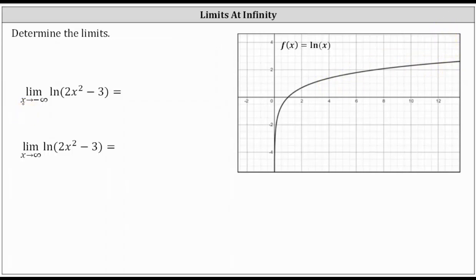Looking at the first limit, as x approaches negative infinity, the input into the natural log function is two times the square of x minus three. As x approaches negative infinity, we square the x value, which will make it positive, then multiply by two and subtract three. The minus three doesn't really matter because it will have a very insignificant effect on two times the square of a value approaching negative infinity. Since two times the square of x minus three will increase without bound as x approaches negative infinity, the outputs of the natural log function will also increase without bound and approach positive infinity, which is what we say the limit is equal to.